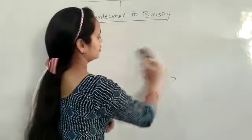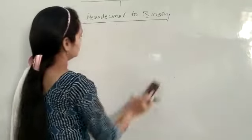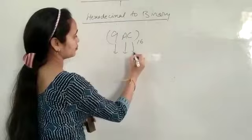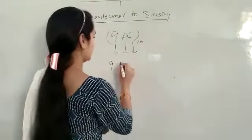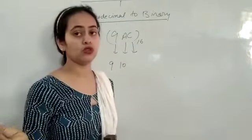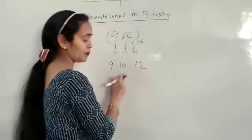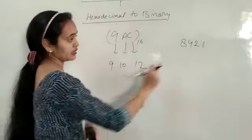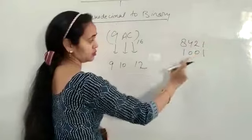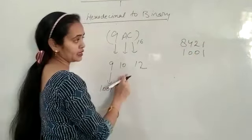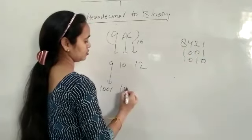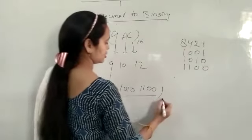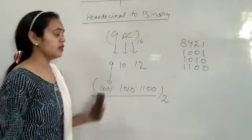The problem is 9AC, and our base is 16. I need the 9 code. 9 is 8 plus 1, so 1001. If I talk about 10 (A), 8 plus 2 is 10, so 1010. If I talk about 12 (C), 8 plus 4 is 12, so 1100. This is our answer and it will be base 2.